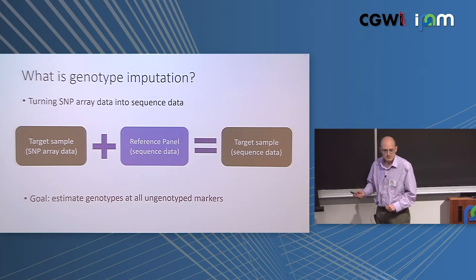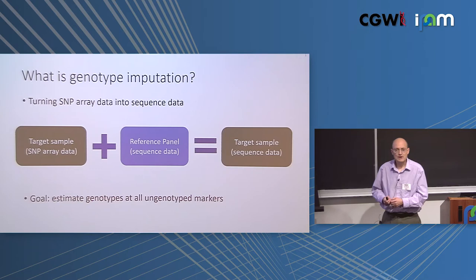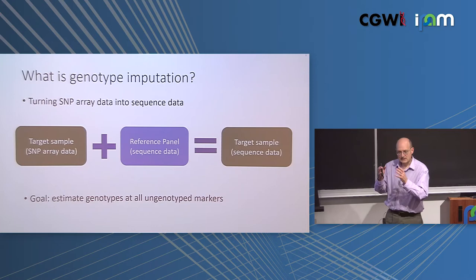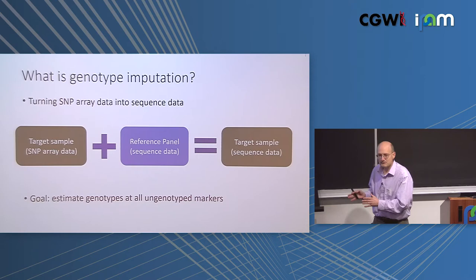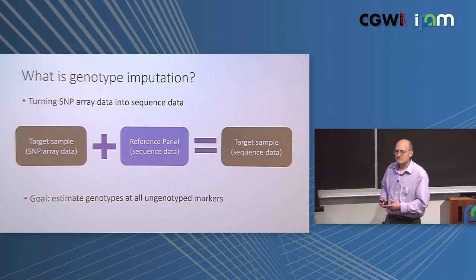The reference panel — you're not really interested in the samples themselves. That reference panel of sequenced individuals provides you the patterns of alleles, the haplotypes, which are sequences of alleles on a single chromosome copy — like the copy you inherited from your mother or father. That haplotype information gives you the information you need at the markers you didn't genotype to get sequence data on your target samples.